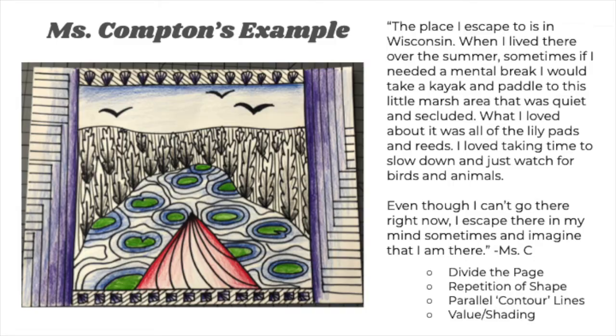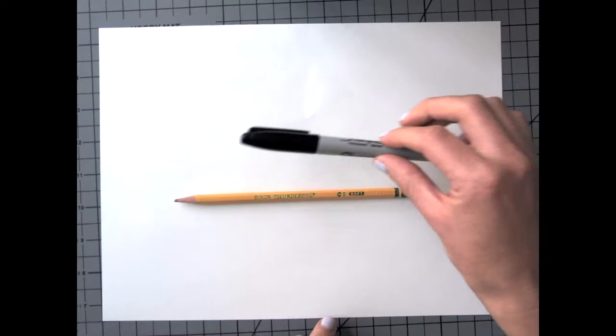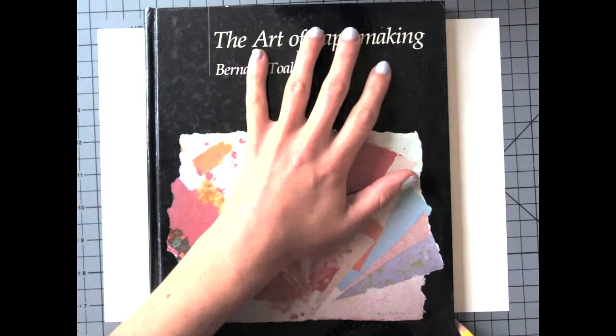Here's my example of where I go to get away. The materials that you need are pretty basic. I started off by using pencil and a book as a ruler, as a straight edge.